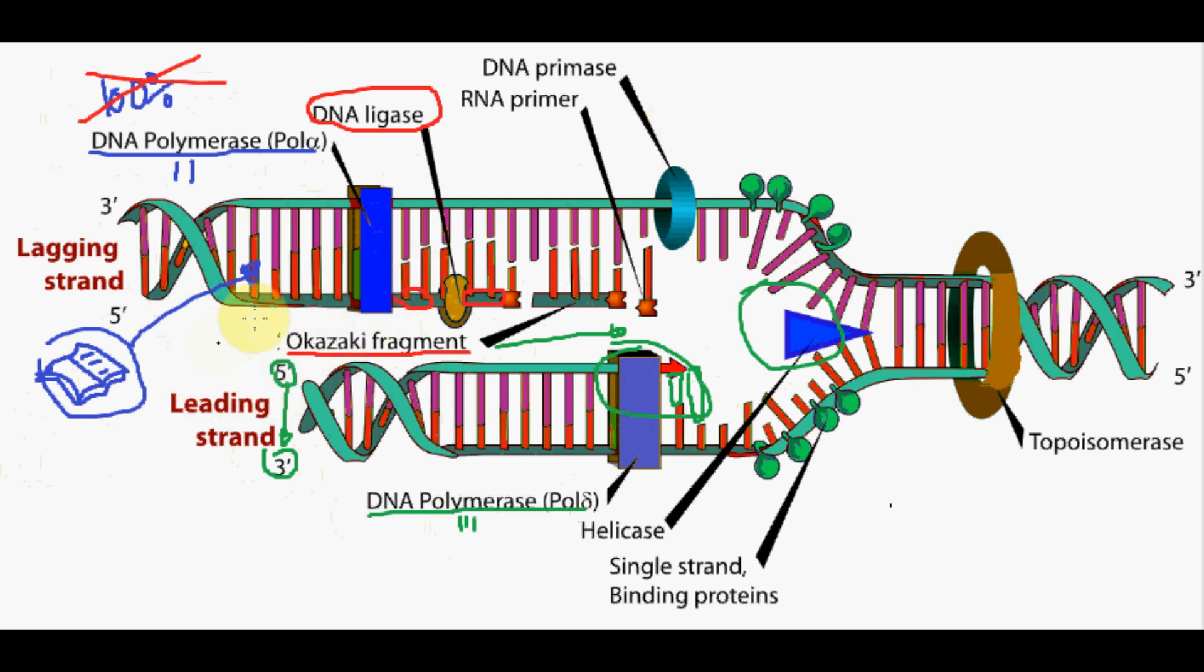The importance of proofreading is more emphasized in DNA replication than in RNA, as DNA holds genetic information not to be replicated, whereas RNA creates proteins that can just be remade.